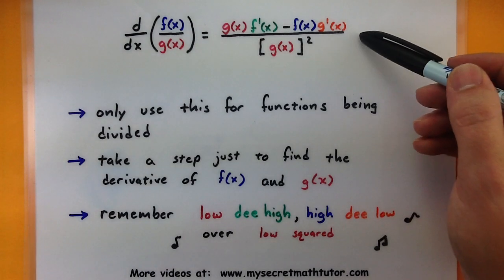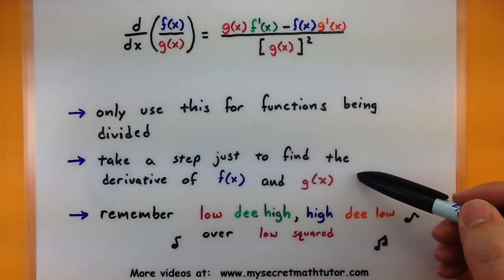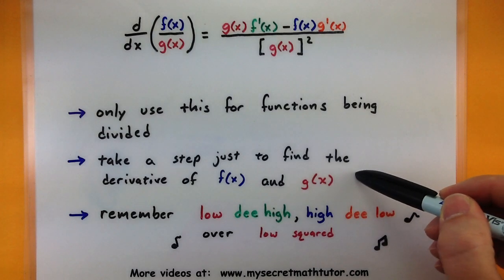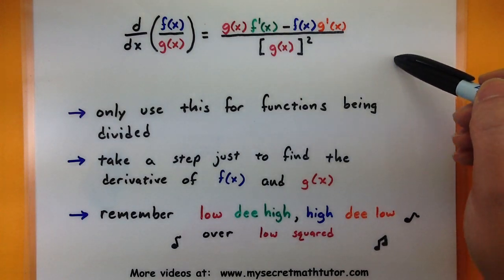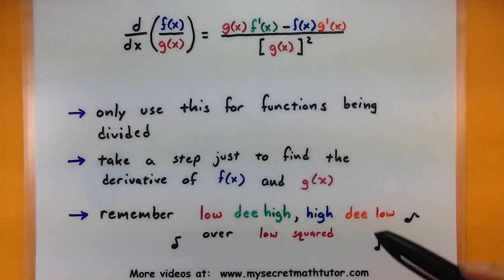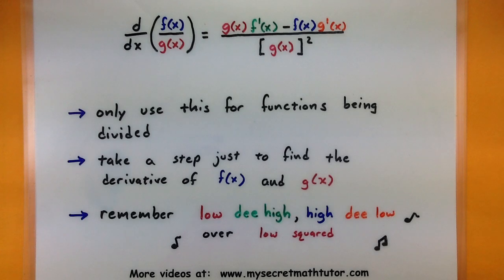To make things a little bit easier on yourself, maybe take an extra step to find the derivative of f and the derivative of g separately before attempting to put them into this formula. If you try and juggle them all at once, you may end up missing a piece or even putting in too many pieces.